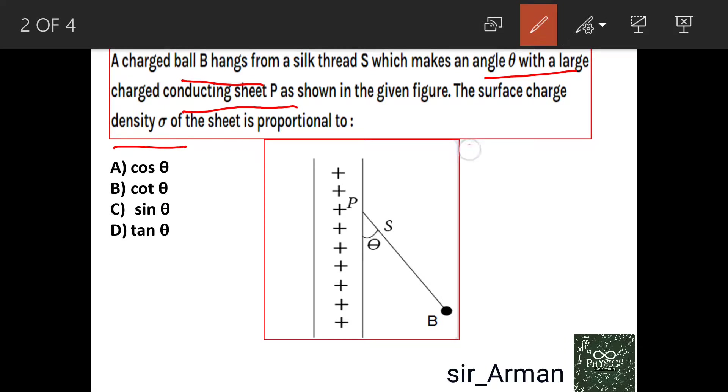We have to find what sigma is proportional to from the given quantities. So here we have charged ball B and a charged plate or sheet having charge density sigma, and the angle between the charge and the sheet is theta.